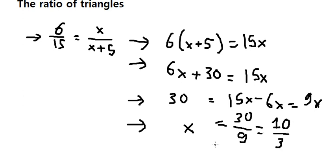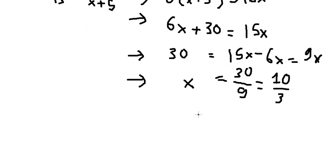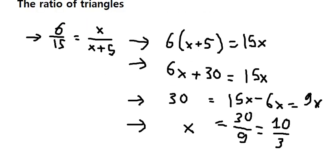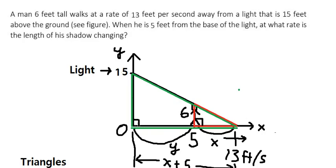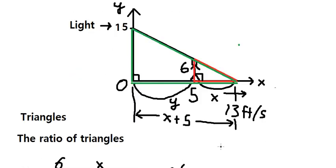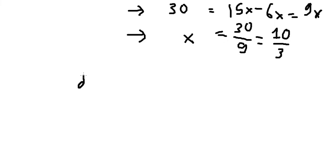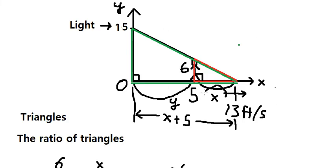After we have S equals 10 over 3, we use a different approach. We change the distance of 5 feet to a variable Y, because as the man moves, Y and X will change. We want to find at what rate the length of his shadow is changing. That is dS/dt.